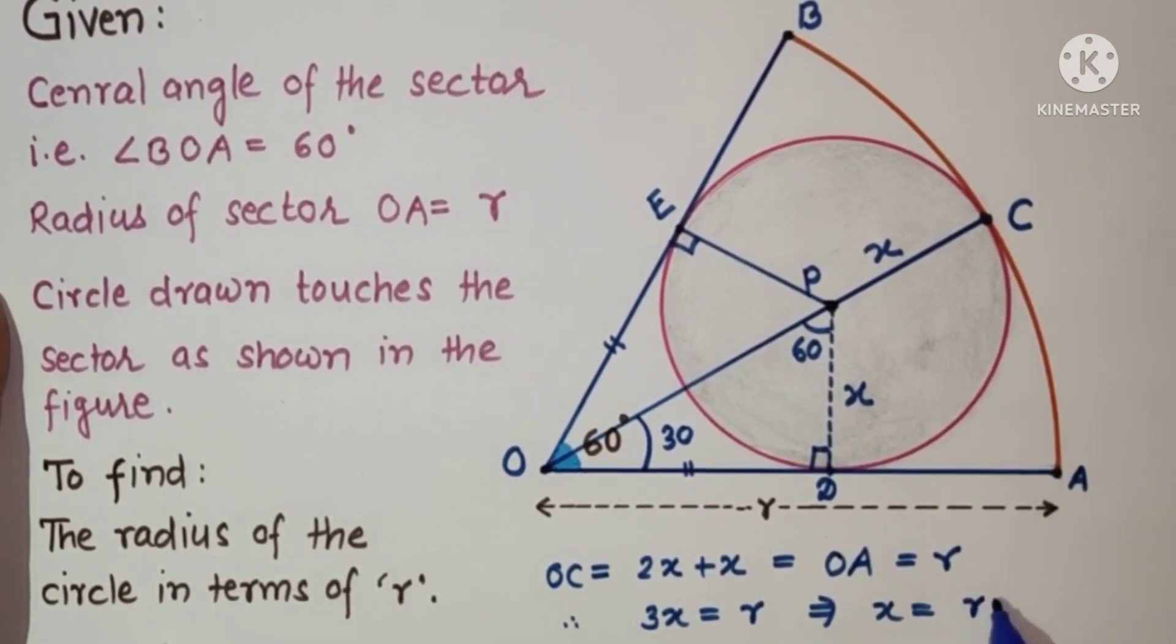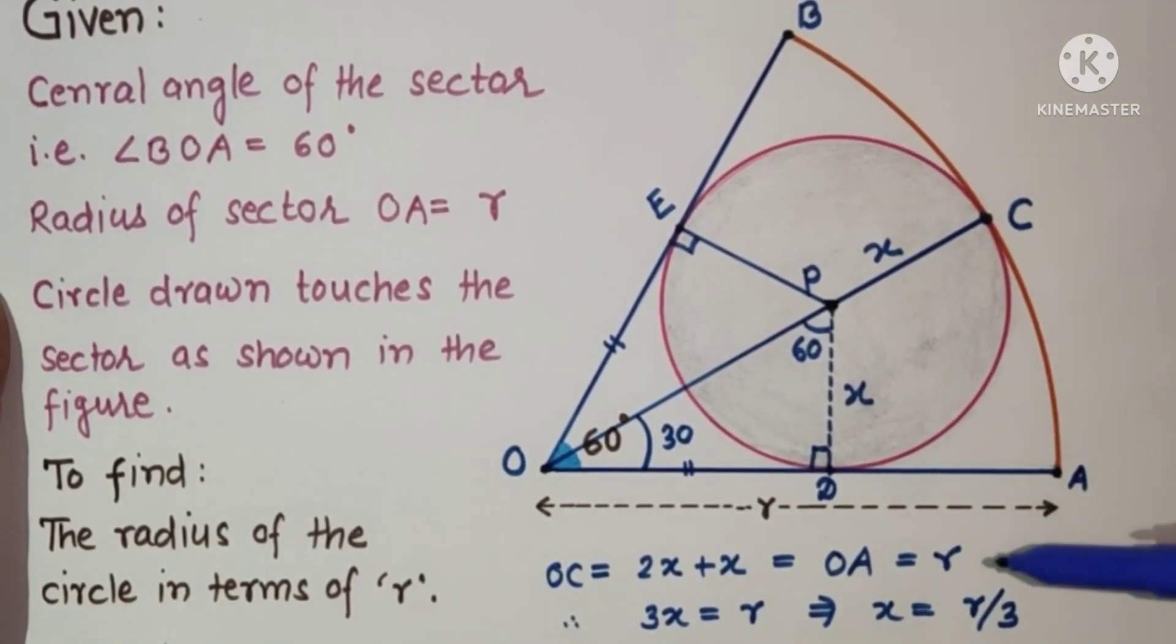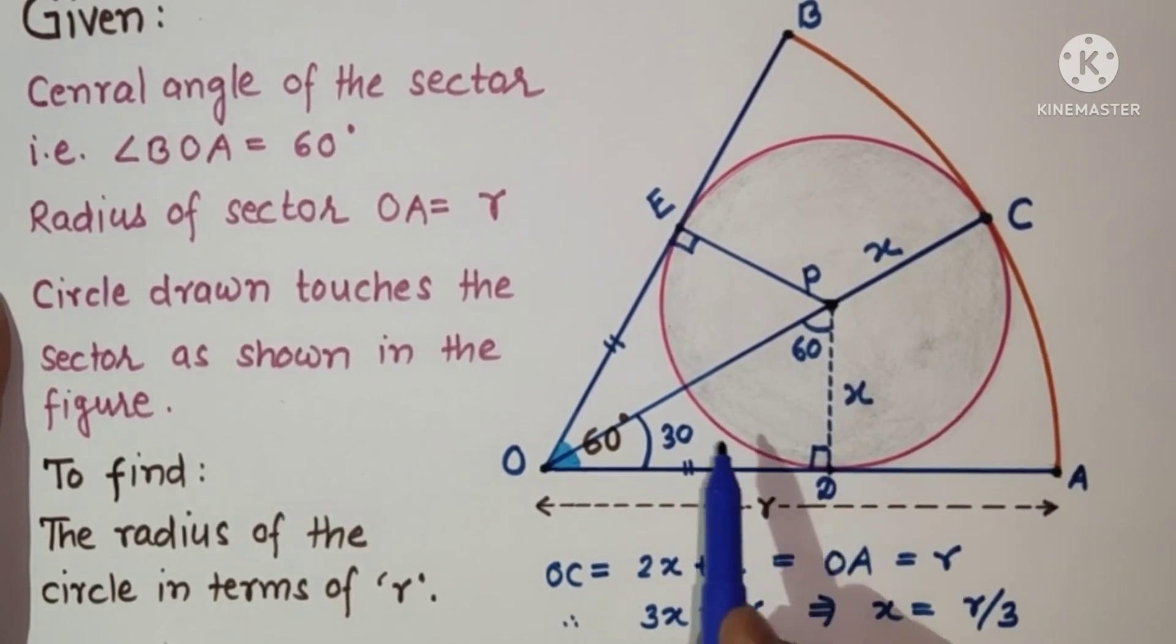So the answer is R by 3. The radius of the circle will be one-third of the sector radius. If you don't want to use the 30-60-90 theorem, then we just join this point to this point.